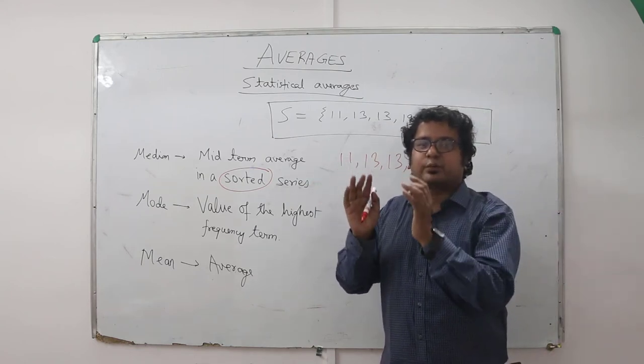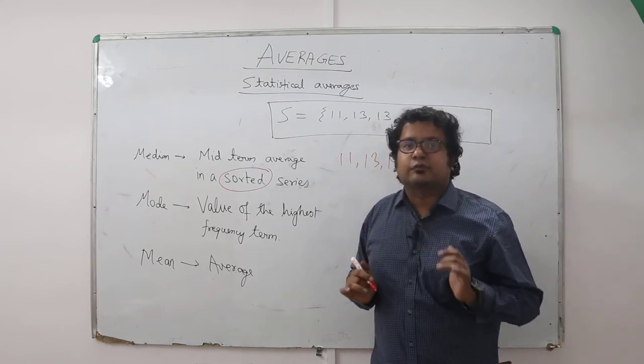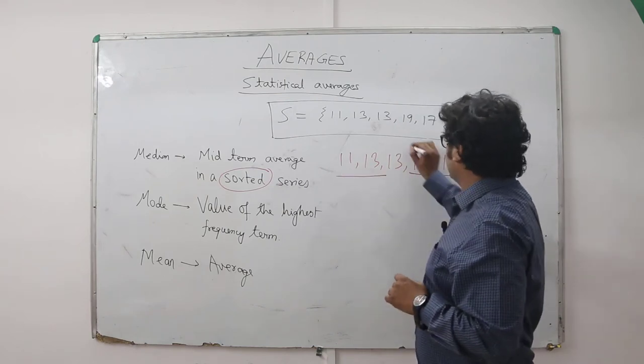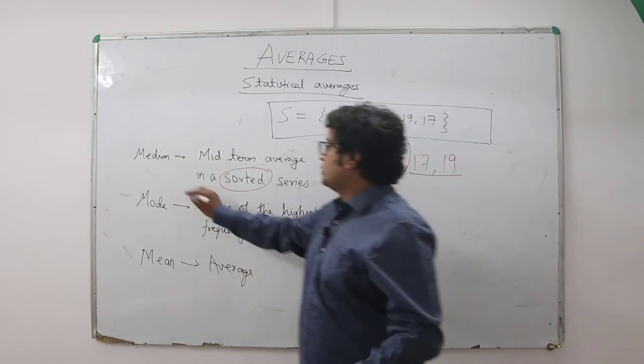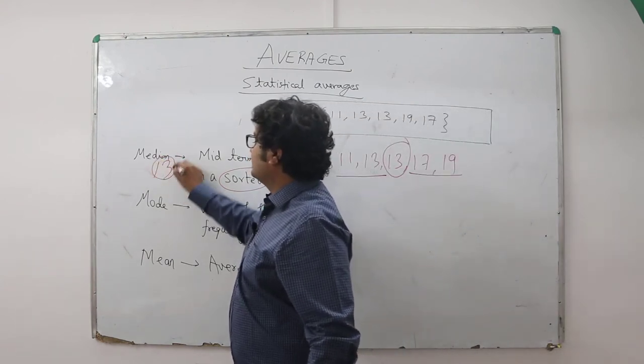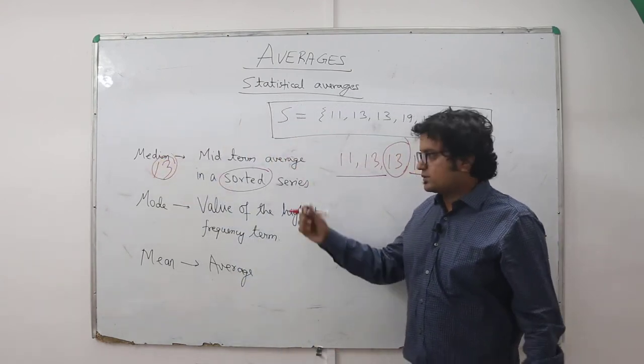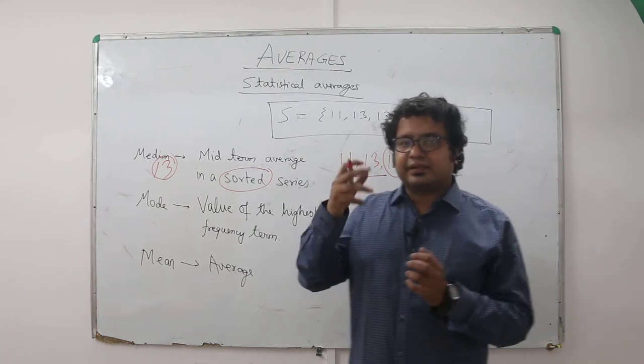You would have been required to find the average of the third and fourth term, but here the middle term is clearly 13. So this becomes the median. The median value is 13. Let's do a small recap: what is the median? It's the midterm average or the midterm in a sorted series.